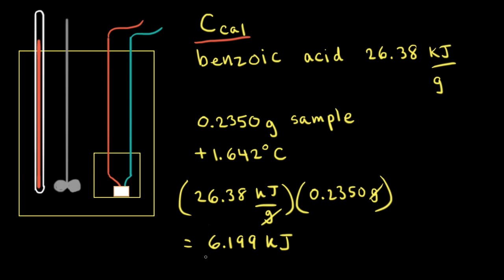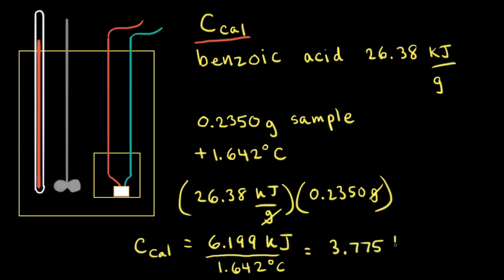Next, we divide this by our temperature change, which was positive 1.642 degrees Celsius, and this gives us the heat capacity of our calorimeter, which turns out to be 3.775 kilojoules per degree Celsius.